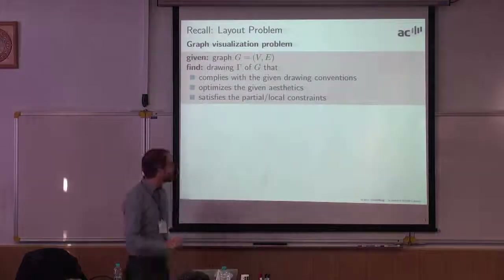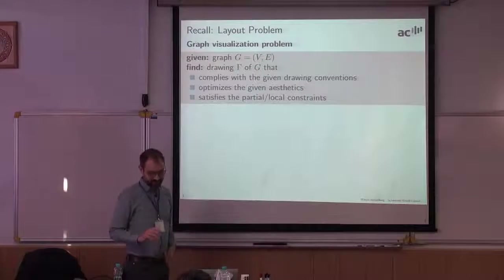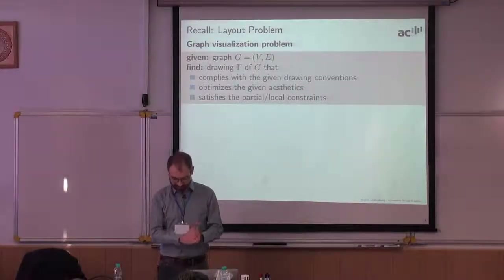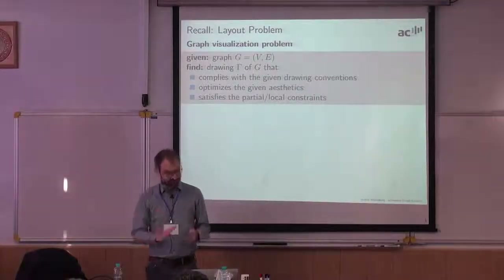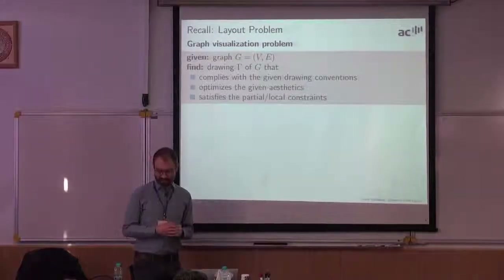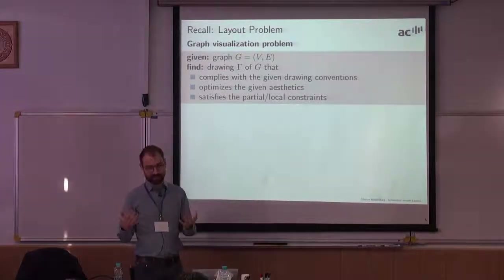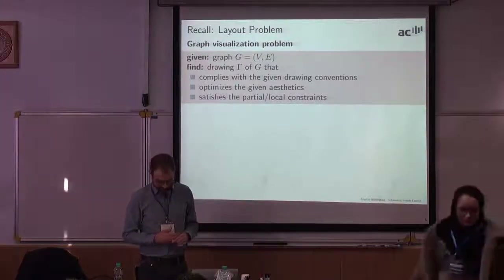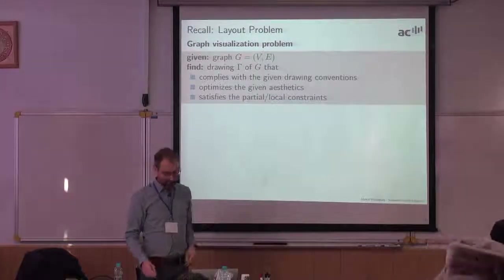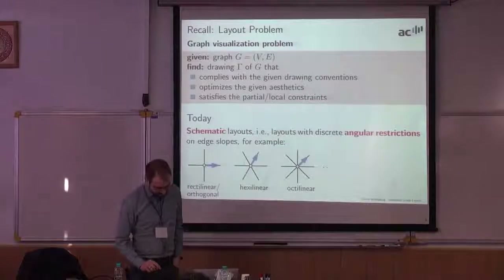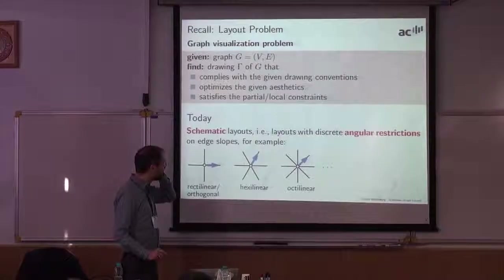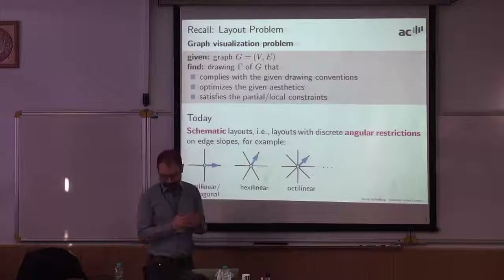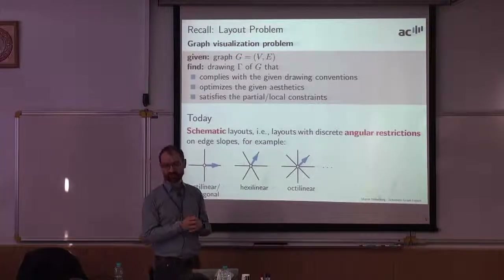This is the layout problem we had seen yesterday: given a graph, find a drawing that satisfies the drawing constraint conventions and optimizes some kind of aesthetics. For example, yesterday we optimized the area — we tried to find minimum area drawings — and also maybe satisfy some local constraints.